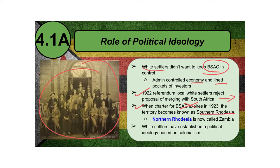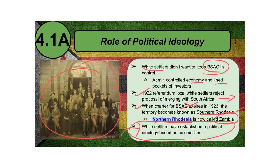The reason it was called Southern Rhodesia is because Northern Rhodesia — now the nation of Zambia — and Nyasaland, today Malawi, were all part of the larger Rhodesia. Southern Rhodesia was Zimbabwe and Northern Rhodesia was Zambia. Throughout all of this, the key thing to note is that white settlers established a political ideology and political system within Zimbabwe based totally on colonialism and colonization.